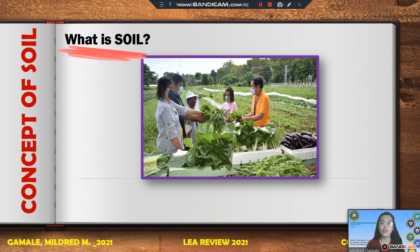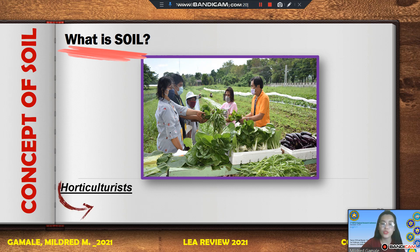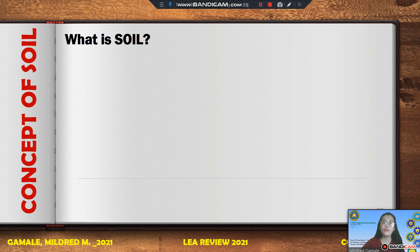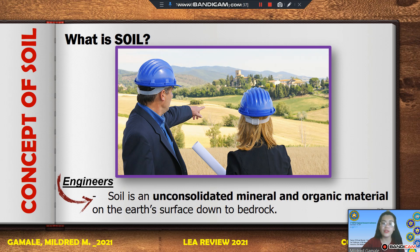Here we have a picture showing a group of people harvesting vegetable crops — specifically kangkong, pechay, and eggplant. They are classified as horticulturists. According to horticulturists, soil serves as a medium of plant growth, providing physical support for the anchorage of plant roots, and acting as a nutrient and water supplier. According to engineers, soil is an unconsolidated mineral and organic material on the earth's surface down to bedrock — something moved around by equipment and assessed for suitability in construction projects like homes, buildings, and roads.